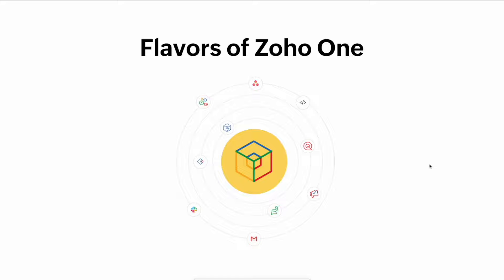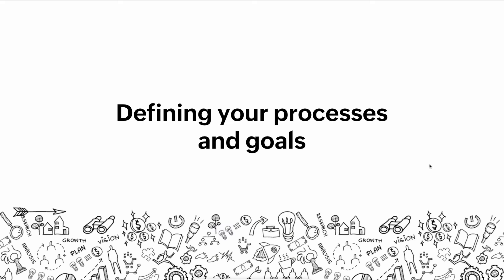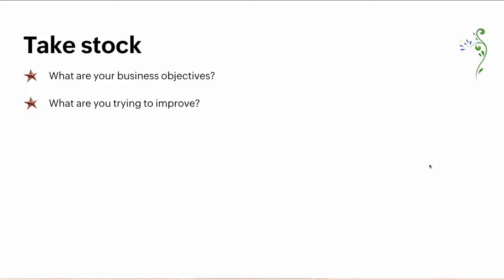Zoho One has a lot more flavors — the list I gave you is very minimal. Now we understand what Zoho One is, how to transform from one app to another, and when to choose an application. Let's define a process. You need to take stock of your existing data: what is your business objective, what are you trying to improve? If you have CRM and finance in place but need lead management improvements, identify which part of your business to improve, review your current process, and check whether something needs to be modified.